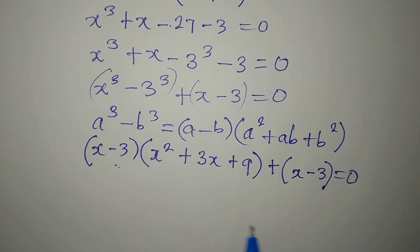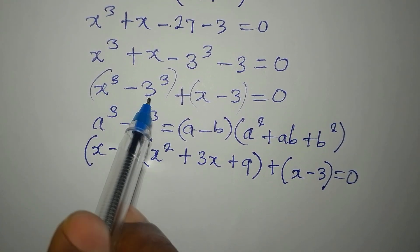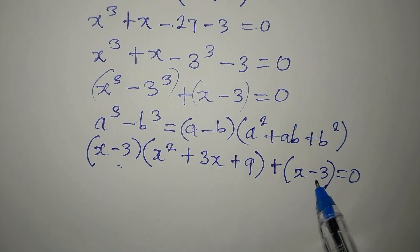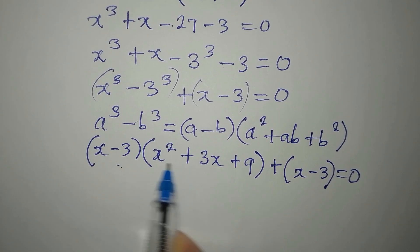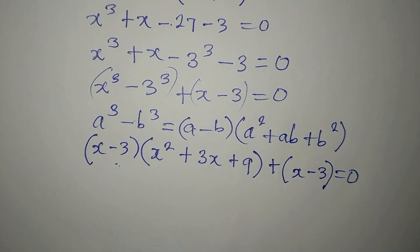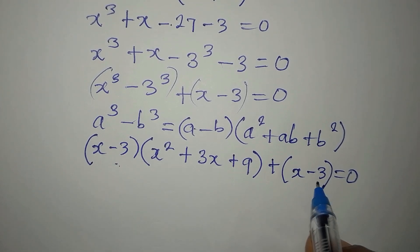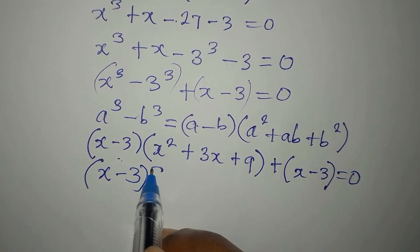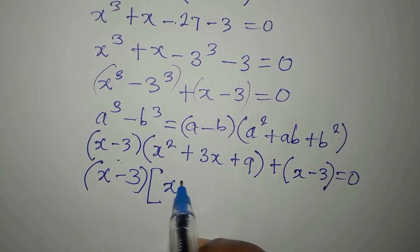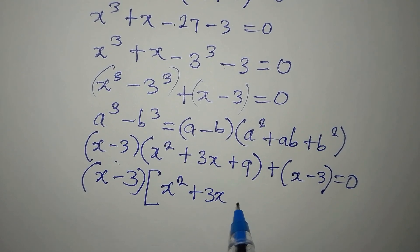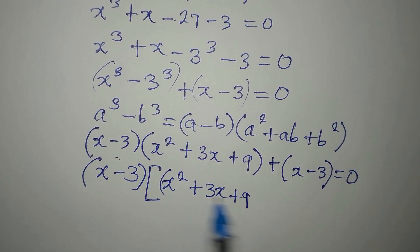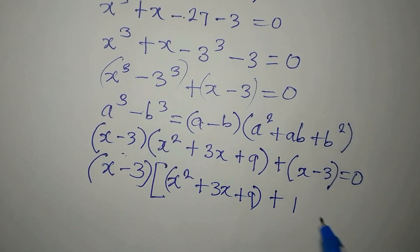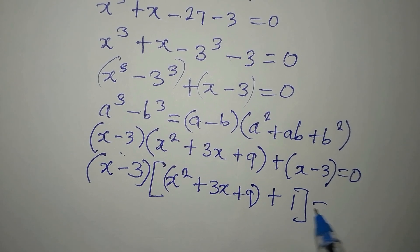What I did is write x³ - 3³ in the difference of cubes form. Now x - 3 appears in both terms, so we factorize: (x - 3) is common. Taking it out, we have (x - 3) times (x² + 3x + 9), and that remaining +1 is still there, all equal to 0.